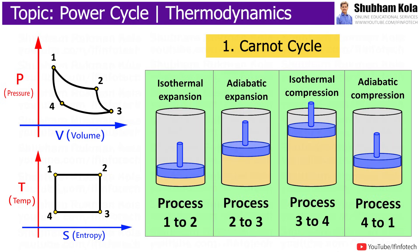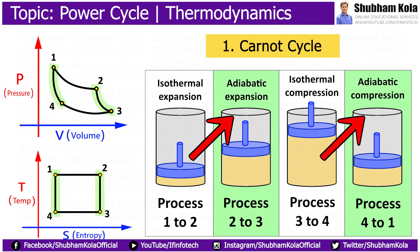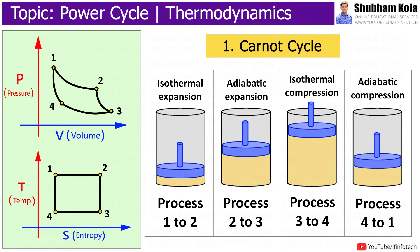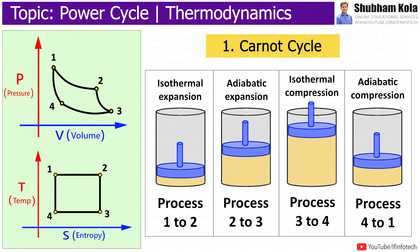These four processes make a power cycle. However, alternating adiabatic and isothermal processes is not possible in practice, because isothermal processes need very slow movement whereas adiabatic processes need very fast movement. Due to this, a Carnot heat engine does not exist in practice. In the Carnot cycle, all processes are reversible, which is also not possible in practice. Any actual cycle operating between the same temperatures cannot have efficiency greater than that of the Carnot cycle, so the Carnot cycle is used for comparing actual cycles.